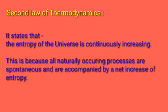The entropy of the universe is continuously increasing, meaning the randomness and disorderness of the universe is continuously increasing. This is because all necessarily occurring processes are spontaneous, and these spontaneous processes are accompanied by an increase of entropy. So the entropy of the universe is continuously increasing.